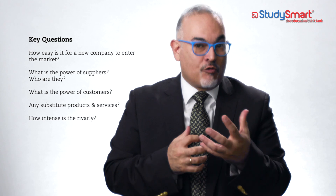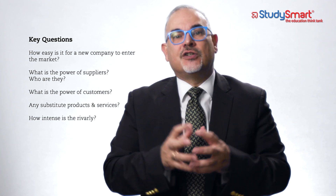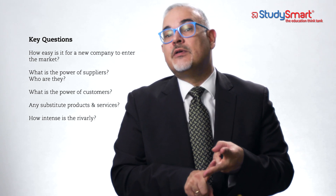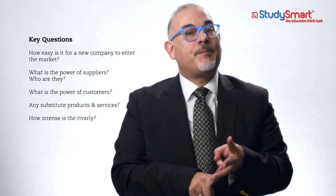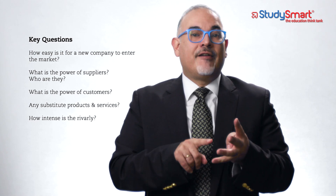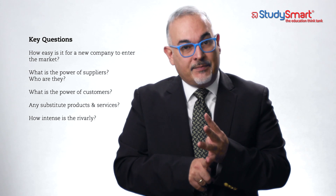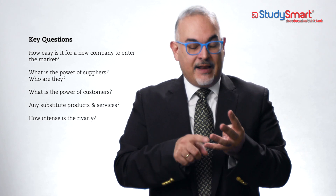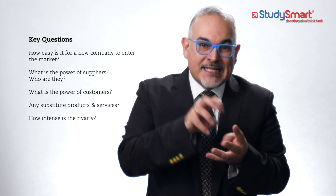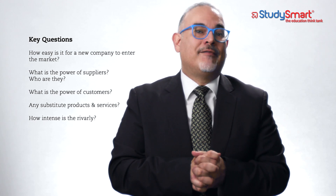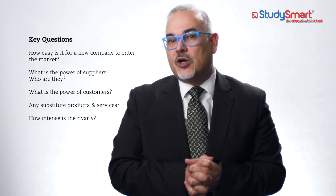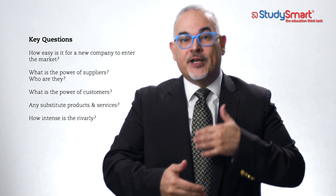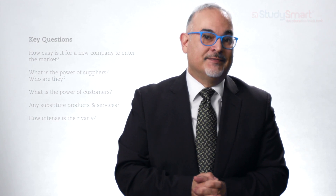Combining these four elements leads us to the fifth element: rivalry — whether it's intense or not. It's the combination of the threat of new entrants, the power of your customers, the power of your suppliers, and the threat of substitutes that may enter your industry and erode your profit. These four areas influence how intense the rivalry is. That's when you start listing your competitors to find ways to continue to learn, change, and innovate to always maintain a competitive advantage.